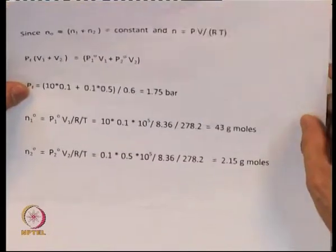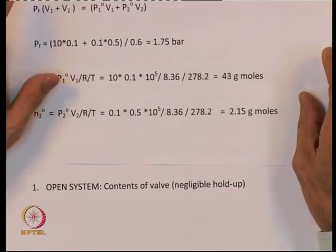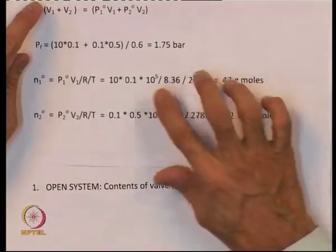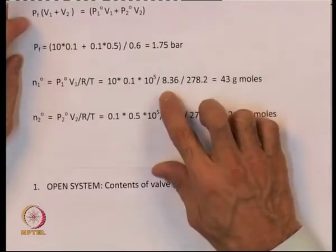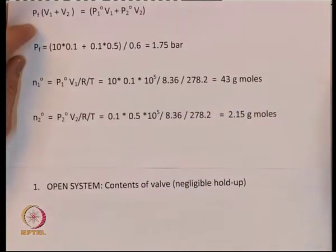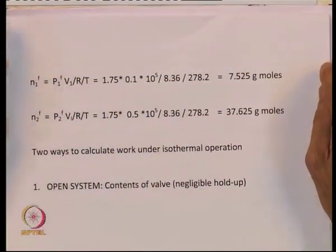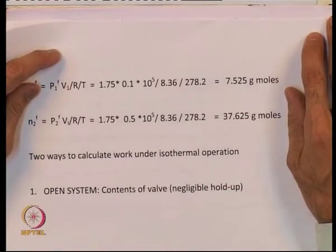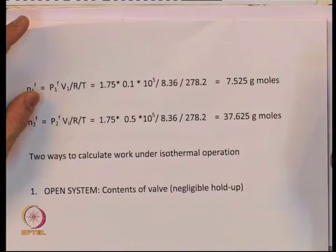Before tackling the work calculation, we calculate the number of moles. N10, the moles initially in tank 1, is given by P10 × V1 / RT, giving approximately 43 gram-moles. The total is 45.15. At the end of the process, the moles in tank 1 decrease from 43 to 7.525 and moles in tank 2 increase from 2.15 to 37.625. There are two ways of calculating work under isothermal operation.